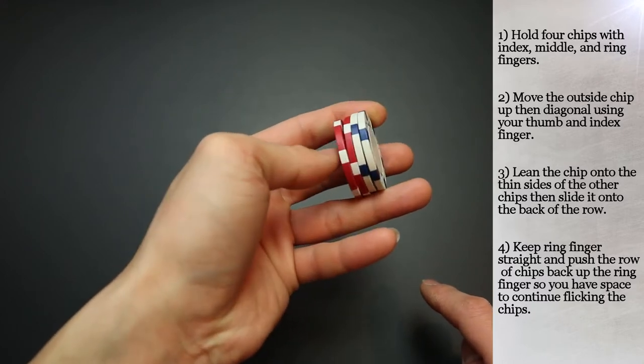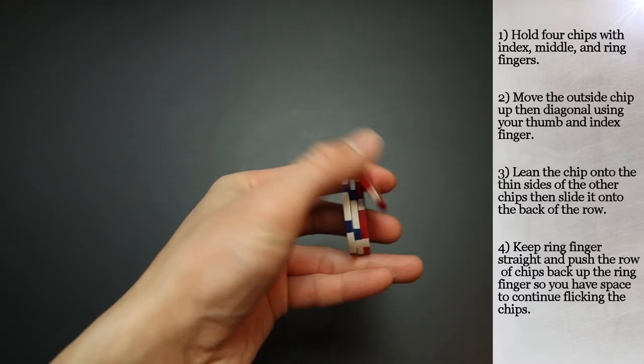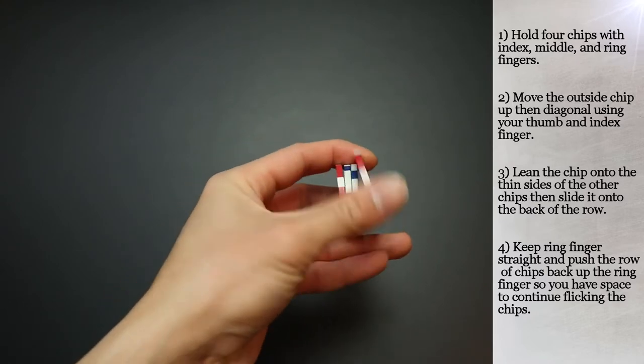After a few flicks, you'll just need to straighten and push the rolls back to the tip of your ring finger before you can do more flicks.